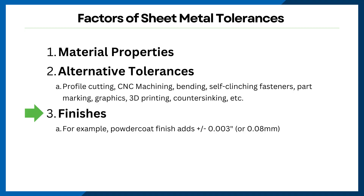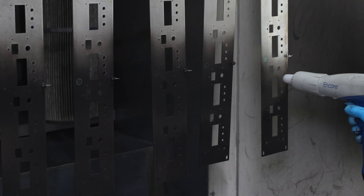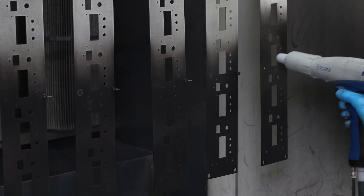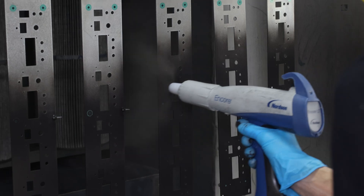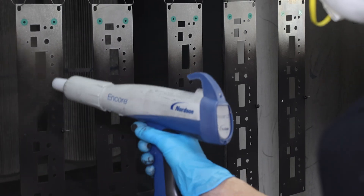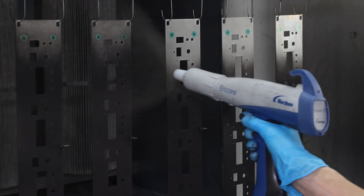It's also important when working with sheet metal that you factor in finish tolerances. For example, if you're going with a powder coated finish, be sure to allow for a tolerance of plus or minus three thousandths of an inch, or 0.08 millimeters, when working with us.